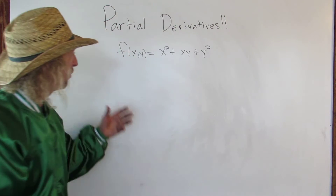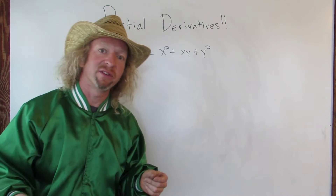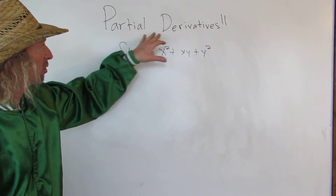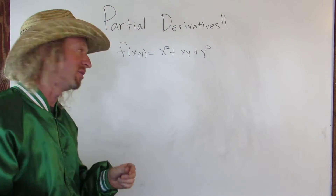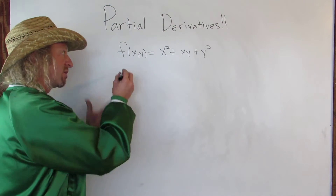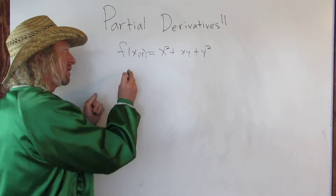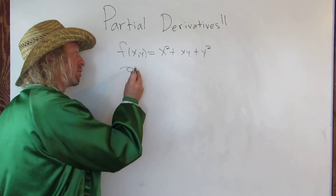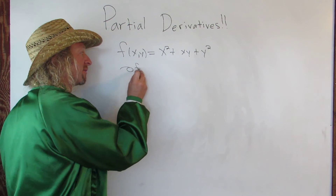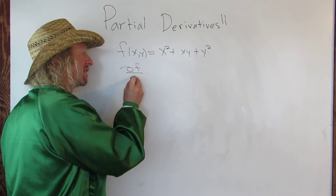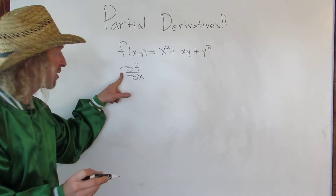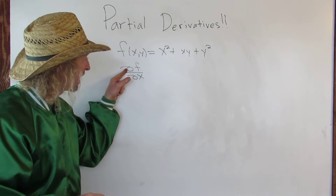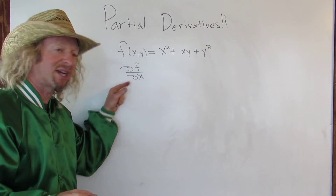Let's say we decide to take the derivative of this. We use something called partial differentiation when we do that. The notation for the partial derivative is del — so del like deli. So del f and then del x. This is called the partial derivative of f with respect to x, read del f del x.